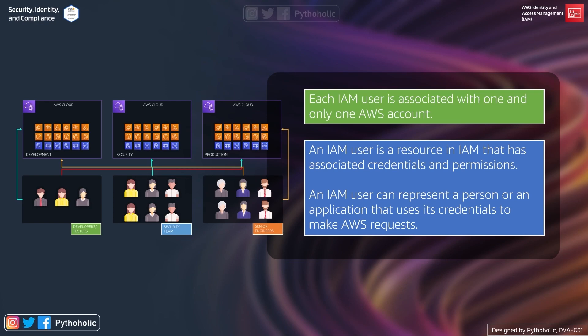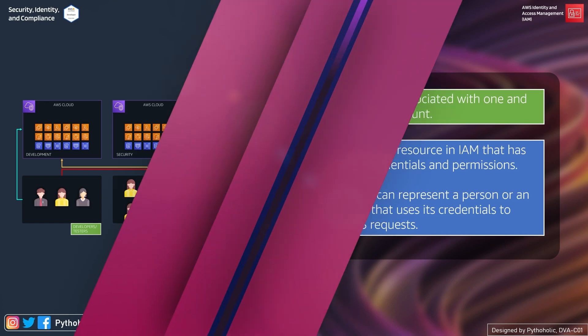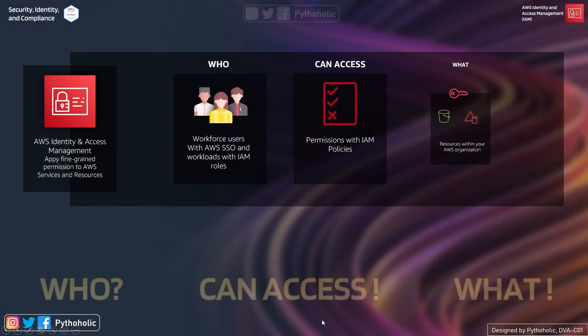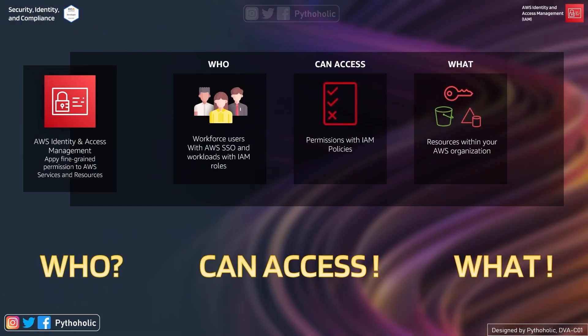You are an entity or resource when it comes to IAM, and AWS decides who can access what based on the permissions and policies that are set. It is very important to keep this in mind about AWS IAM: who can access what.